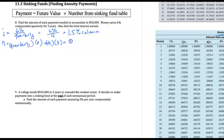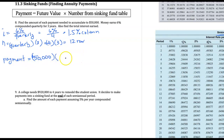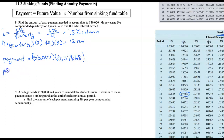To find our single quarterly payment, we're going to take that goal of fifty thousand dollars — the future value — and multiply it by the number in the table at the one and a half percent column and row 12. Going down the one and a half percent column to row 12, I get the decimal 0.076668. Multiplying, we get that one single payment is three thousand eight hundred thirty-four dollars.